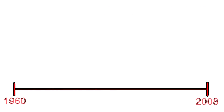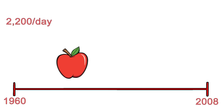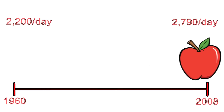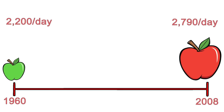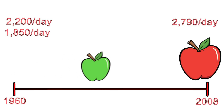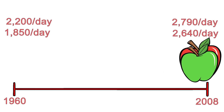Despite what you might expect, no — we're not. Another statistic from worldhunger.org states that for the world as a whole, per capita food availability has risen from about 2,200 calories per person per day in the early 1960s to 2,790 calories per person per day in 2006 to 2008. Developing countries even recorded a leap from 1,850 calories per person per day to over 2,640.